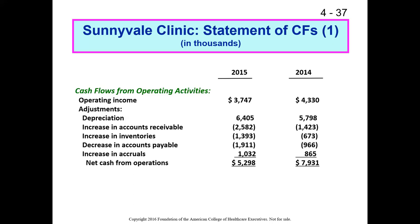Anytime accounts receivable increases, it means we've billed for services we've rendered but haven't received the cash yet — our revenues are overstating how much cash we have on hand. So when we see an increase in accounts receivable, we expect to get paid at some point but haven't yet, and we have to subtract that amount back away. The cash on hand we're estimating based on operating income is overstated, so we subtract it off.